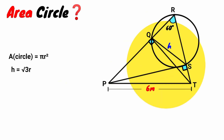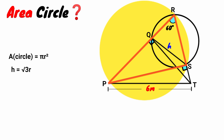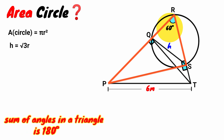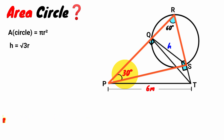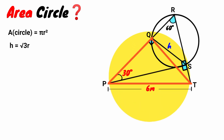Since angle PST is a right angle, triangle PST is a right angle triangle. We have the size of this angle as 60 degrees. Based on the rule that the sum of angles in a triangle is 180 degrees, this angle must be 180 minus 90 minus 60 degrees. That gives 30 degrees, so the remaining angle is 30 degrees.